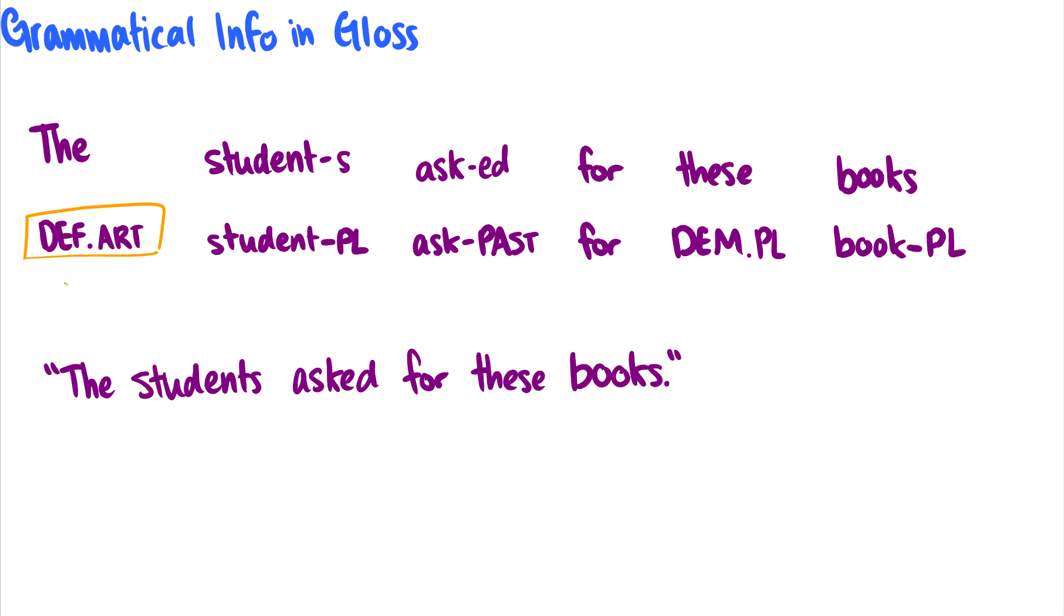Okay, take a look at the second word students. Well, student is a word on its own. And what is this s? Well, students, that s morpheme is really just a plural marker. So we can denote that by saying student dash plural. And this dash plural means that the morpheme is a plural morpheme. Okay, compare this to the dot in the definite article. Now, this means that the dot, that the article is part of the word. Maybe looking at these as well for dem plural. So a demonstrative, a plural demonstrative, it's not a morpheme that is a demonstrative and then a morpheme that is a plural coming together. It's just one word.